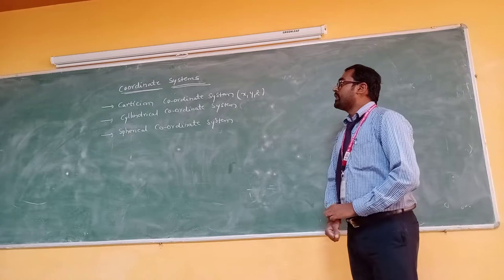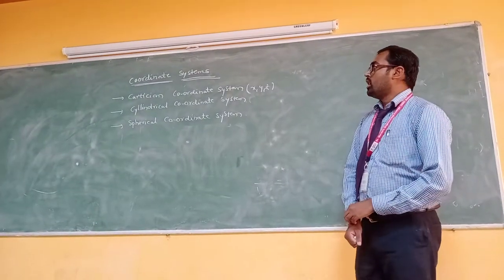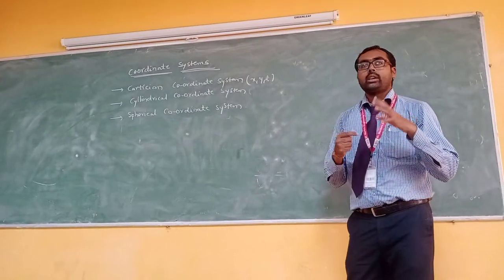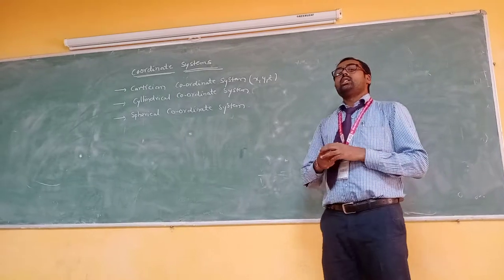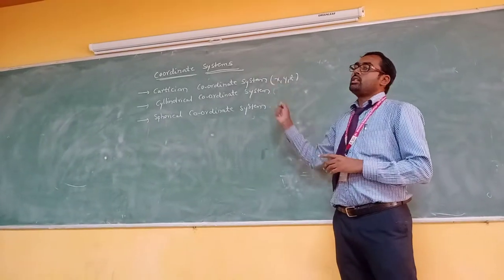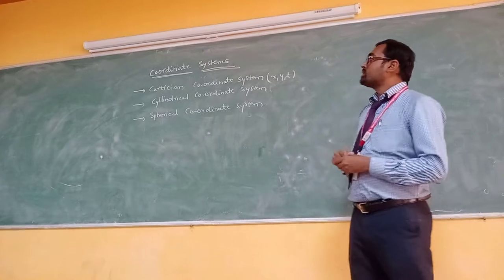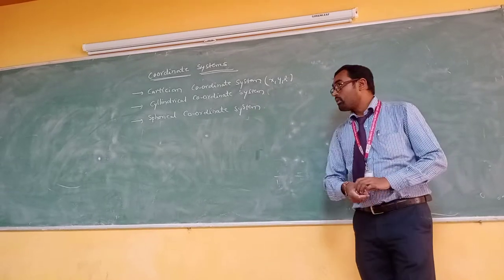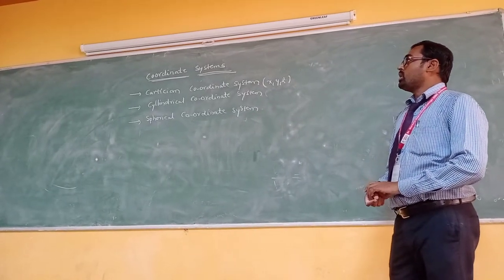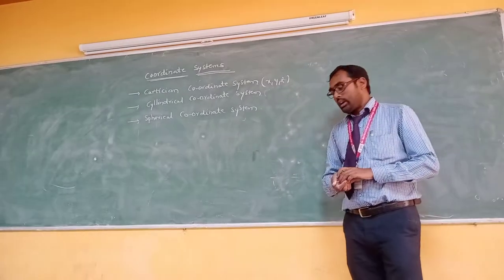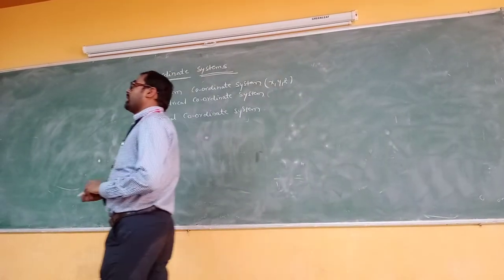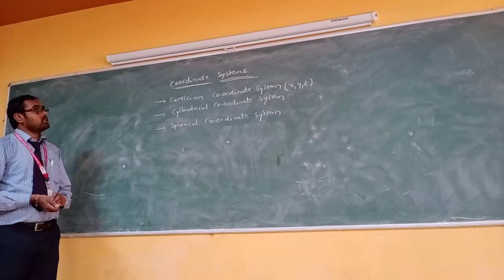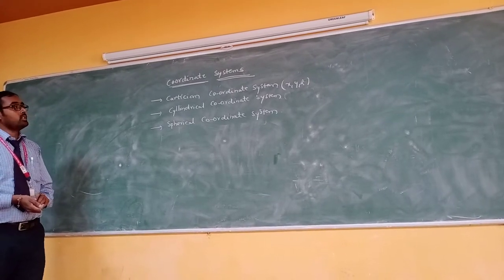Here, why we deal with this topic in that particular subject is that whatever the electromagnetic field components, we can analyze the electromagnetic field by using these coordinate systems. These three coordinate systems are the Cartesian coordinate system, cylindrical coordinate system, and spherical coordinate system.